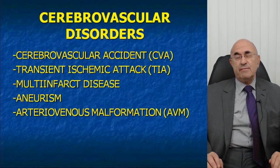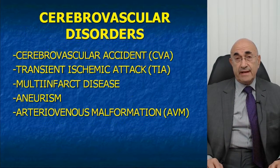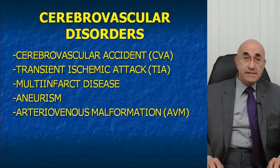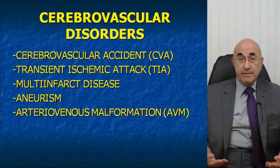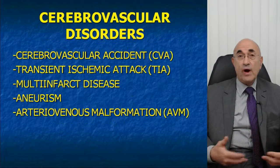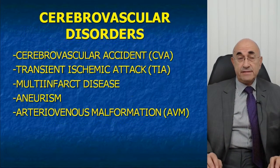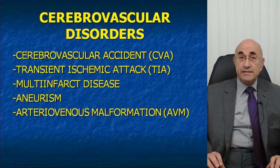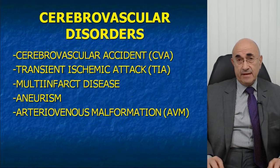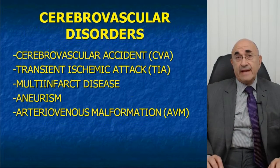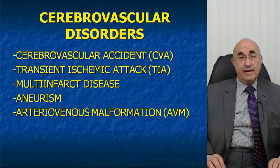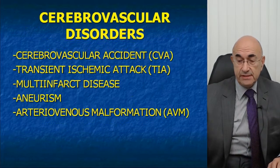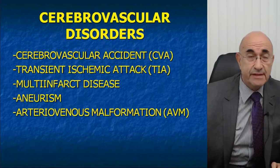Why? Because CVAs are particularly likely to occur within the distribution of the middle cerebral artery, which by definition means they affect one or the other hemisphere. The same is true for transient ischemic attacks — they are very likely to be lateralized.